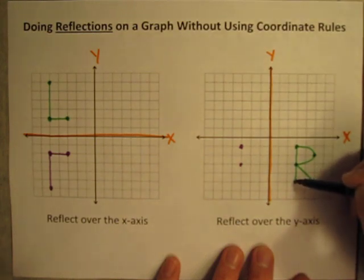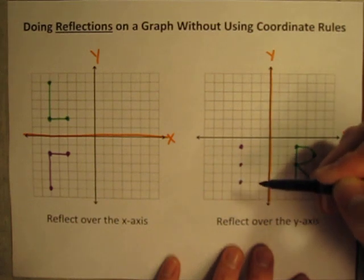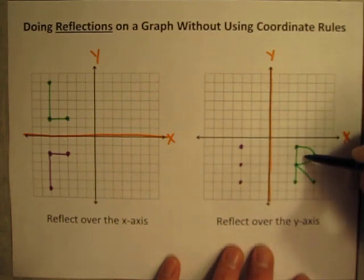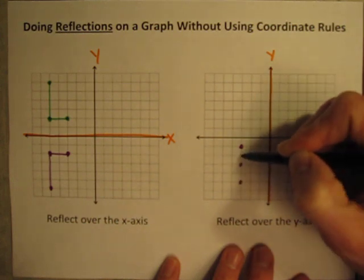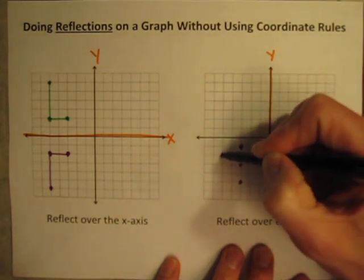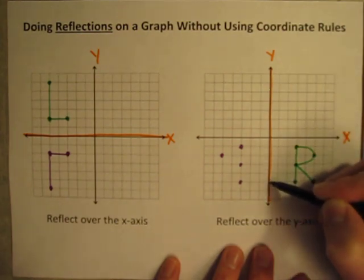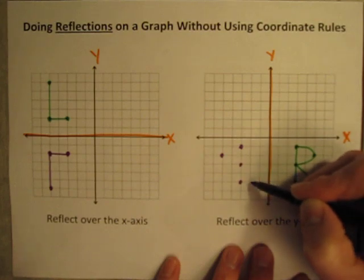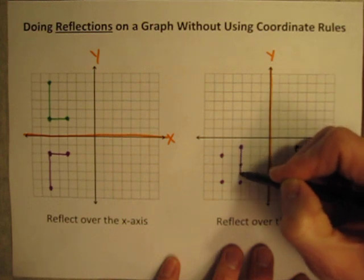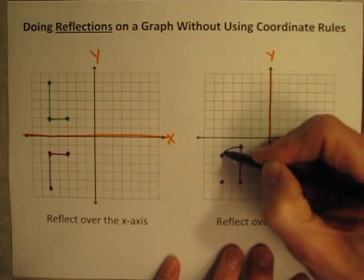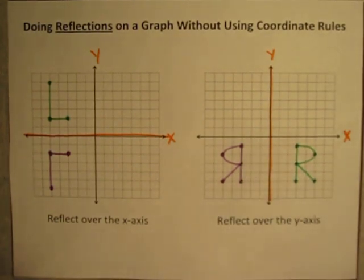This point is also three to the right, so one, two, three to the left. This point is five to the right, so five to the left. And the final point is five to the right, so it will reflect five to the left. I can now just draw in my shape, and here is my reflected letter R, reflected over the y-axis.